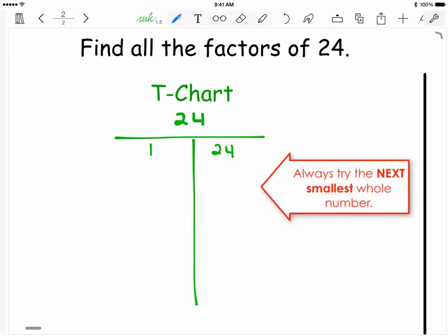Then you try the next smallest whole number, which is 2, since it goes into 24 as well. It will be paired with 12, because 2 times 12 is 24. The next whole number to try will be 3, since it also goes into 24. It will be paired with 8, as 3 times 8 is 24, followed by 4 times 6.